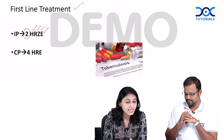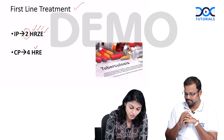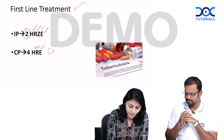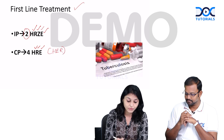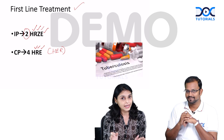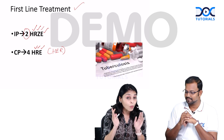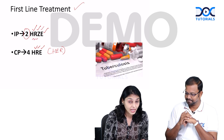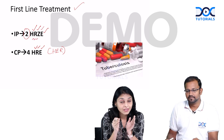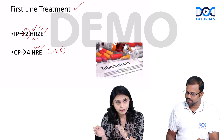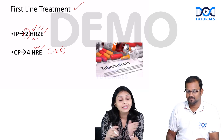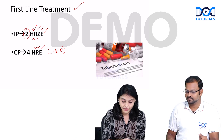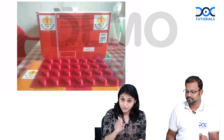For the continuation phase, it is four months, and what we give is HRE — no pyrazinamide in the continuation phase. You can remember it as HER. So this is what we give in first-line treatment. The two most important drugs in first-line treatment are INH and rifampicin. If the patient develops resistance to INH or rifampicin or to both, the regimen changes, and we move to the drug-resistant regimen.